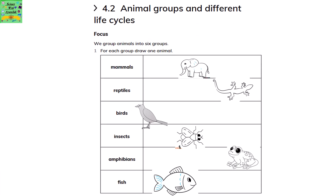Animal groups and different life cycles. We group animals into six groups. For each group, draw one animal.